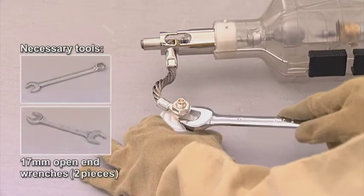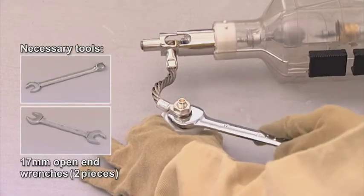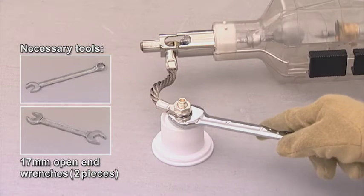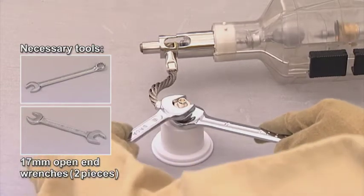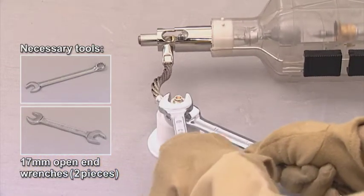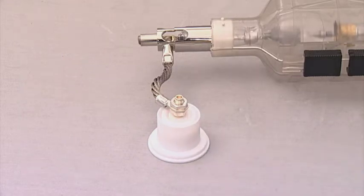Remove the anode wire lug from the anode socket. Use two open-end 17 mm wrenches to do so. Hold one nut with one wrench while releasing the other nut with the other wrench.